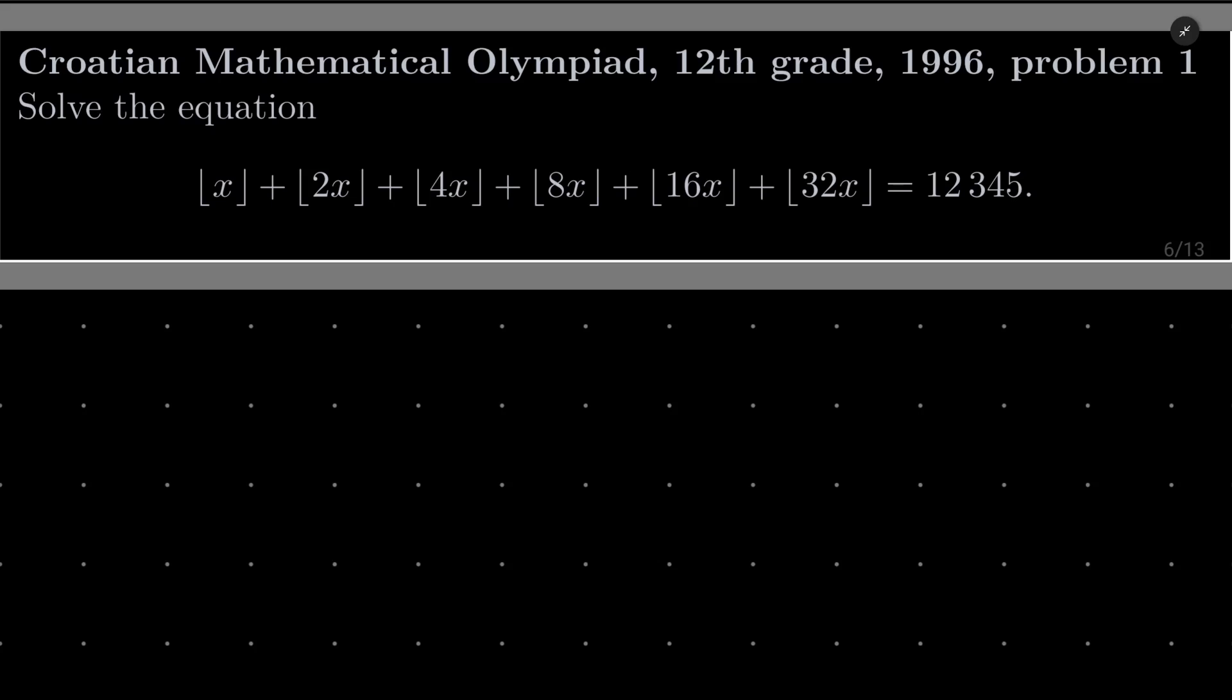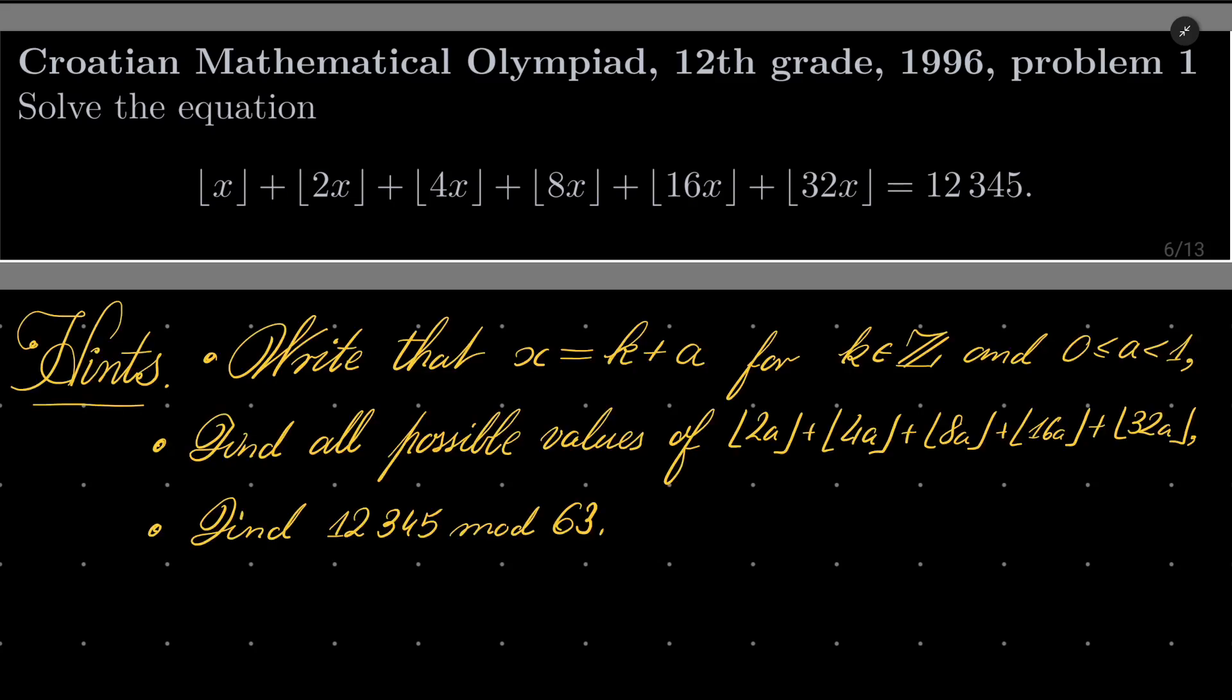It's a nice problem, not very difficult. Here are my hints. First, as usual, write that x equals k plus a, where k is some integer and a is some number between 0 and 1, and plug it in on the left hand side and find all possible values of floor of 2a, floor of 4a and so on.